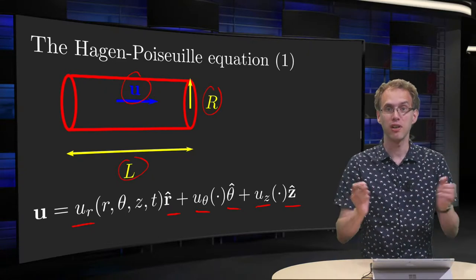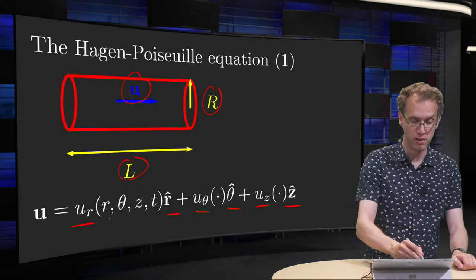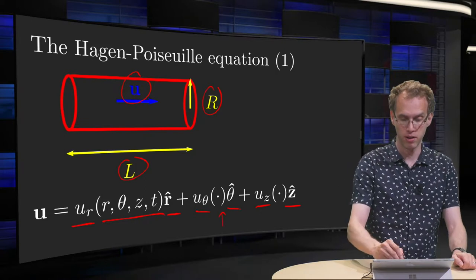And in full generality, all these three components will depend on r, theta, z, and t, same for the other ones.